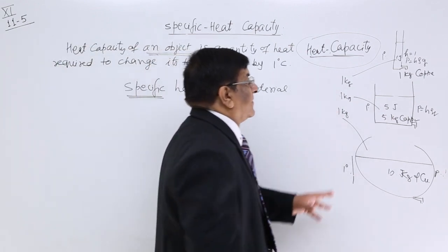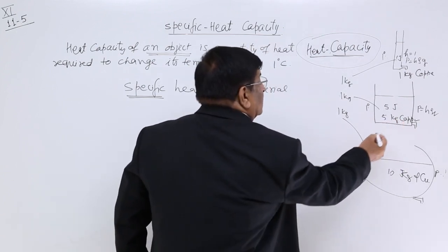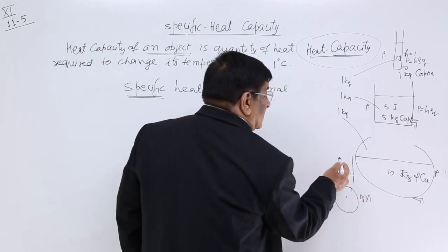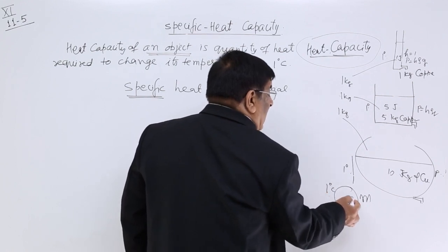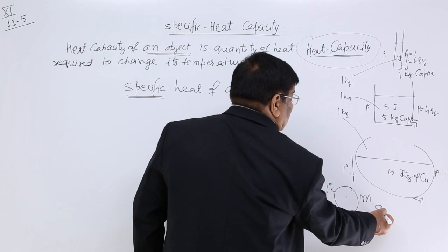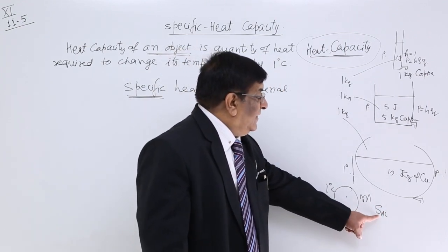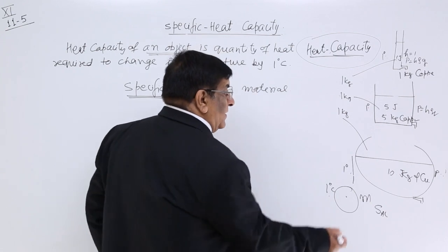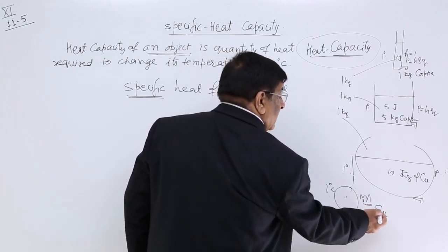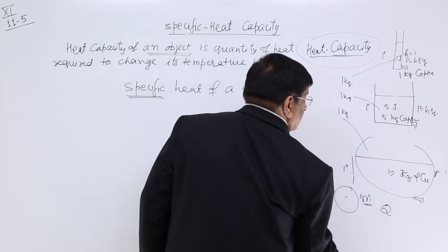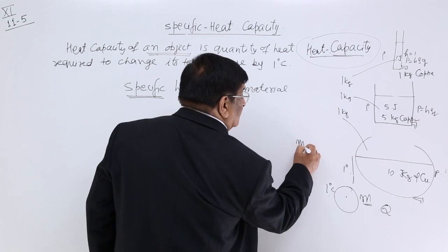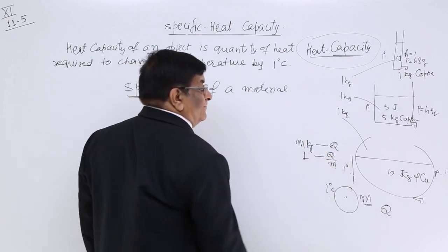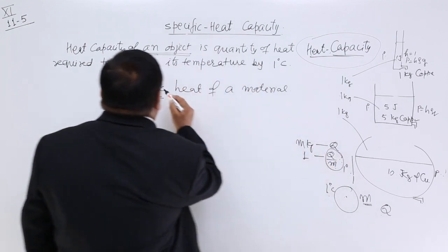In case of aluminium, I take a mass M and rise its temperature by 1 degree. I have to give it certain heat Q. For M kg, heat taken is Q. For 1 kg, how much will be the heat taken? Q upon M, for 1 degree. This is known as specific heat.